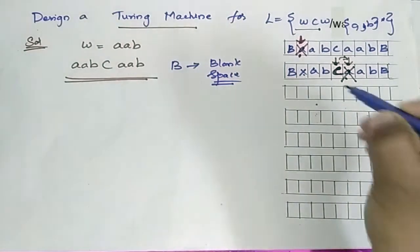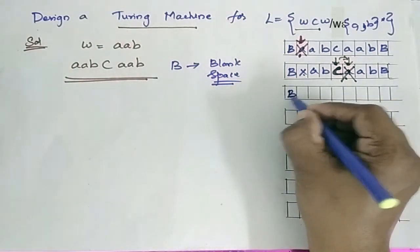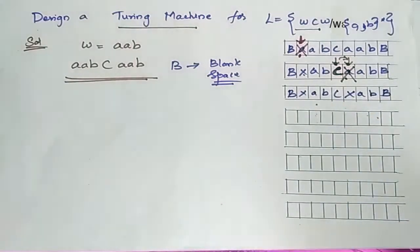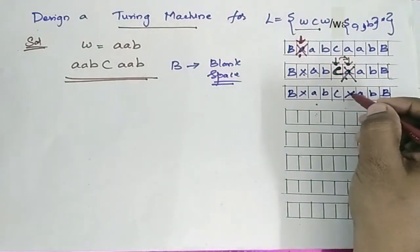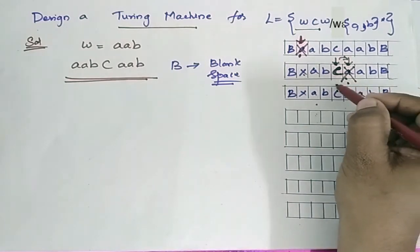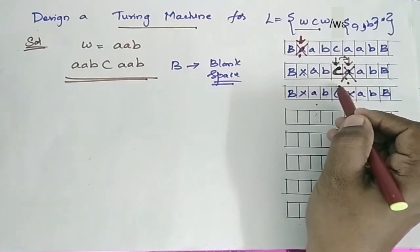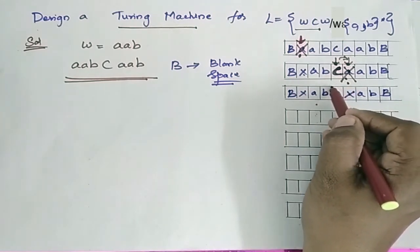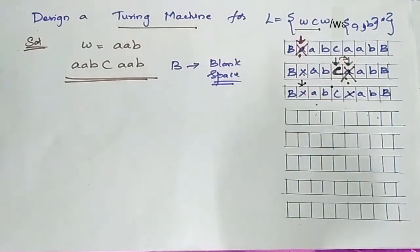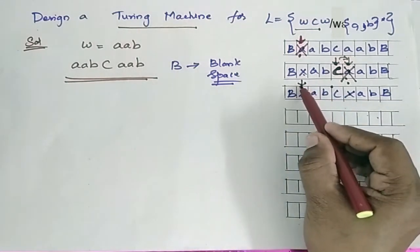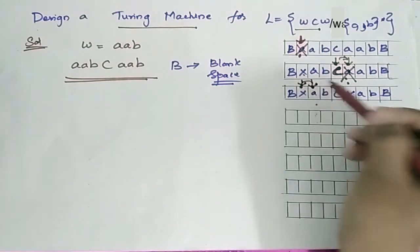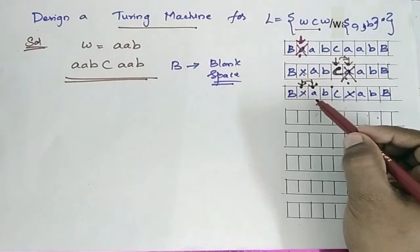If it finds the matching A, this A is replaced by X. Now the string is updated. Once the replacement is done, the tape header moves left, crosses C, and continues moving left until it encounters the first X.